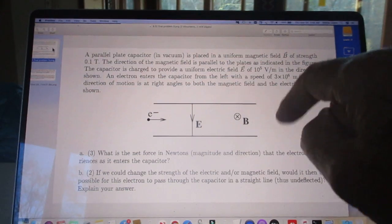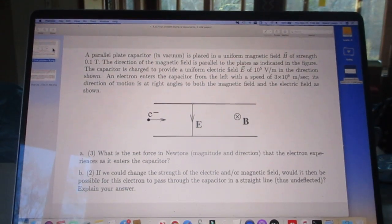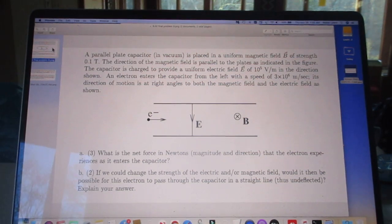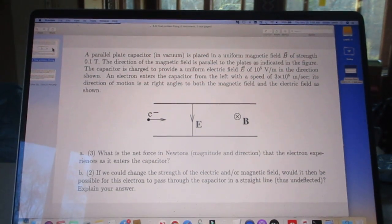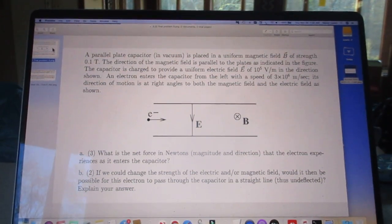And then there is another force. We call that the Lorentz force, which is Q, the charge, which is negative, times V cross B. V is the speed of the electron and B is the magnetic field. Both are vectors. It is the cross product. Okay.